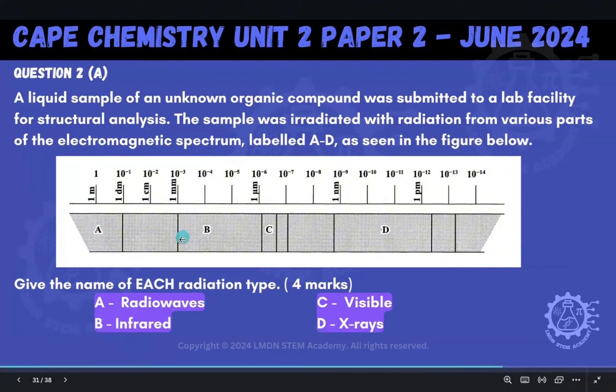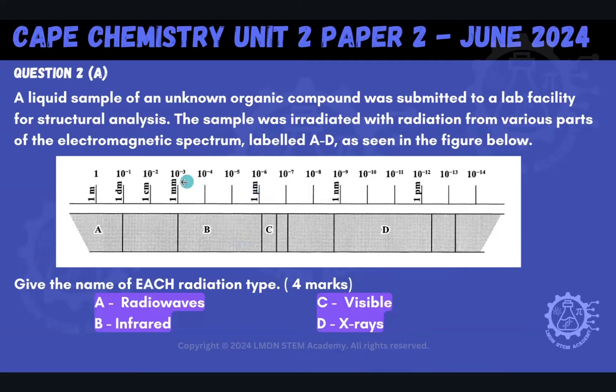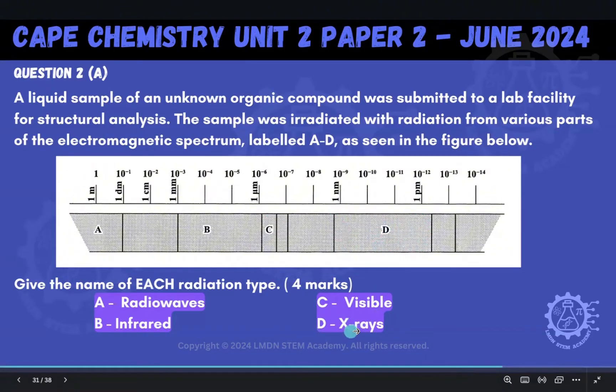And then B would be our infrared waves. Those are between 10 to the minus 3 and 10 to the minus 6 here. And then C, this little region here, will be our visible region. And then D, now where we start to get into these shorter wavelengths, higher energy. Those are our x-rays.